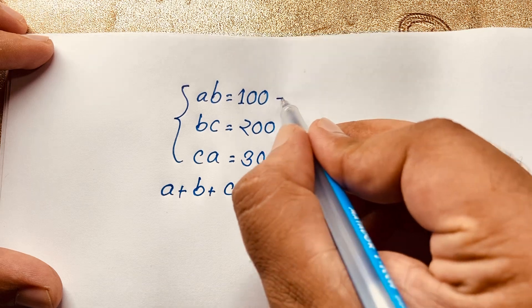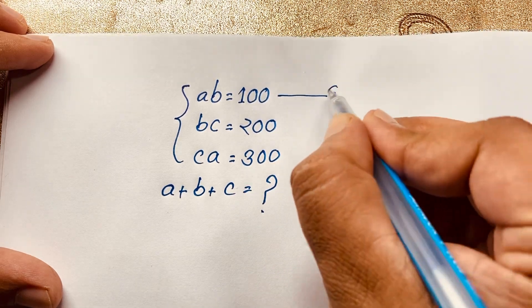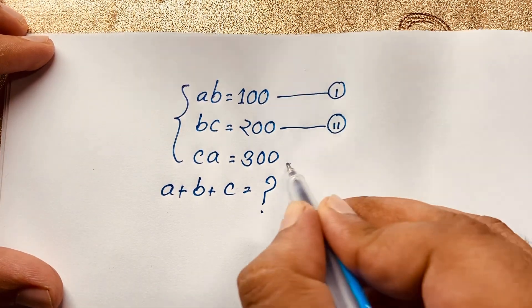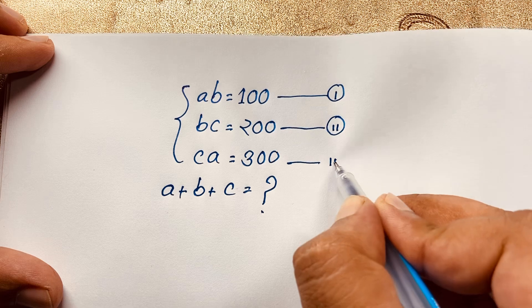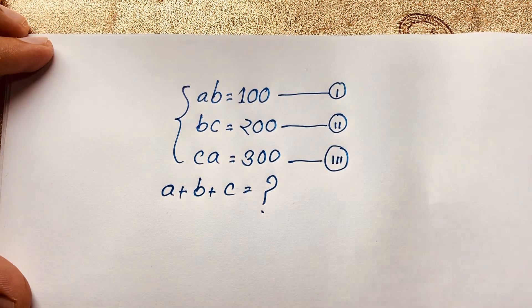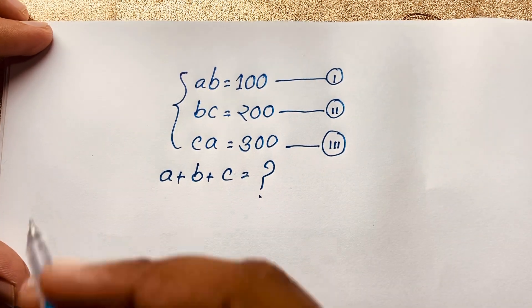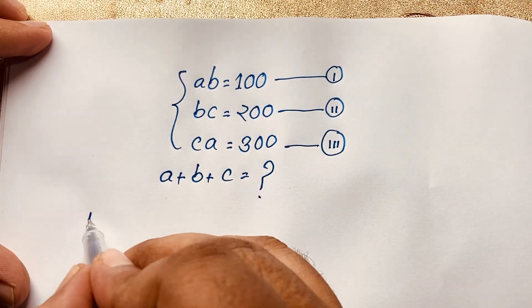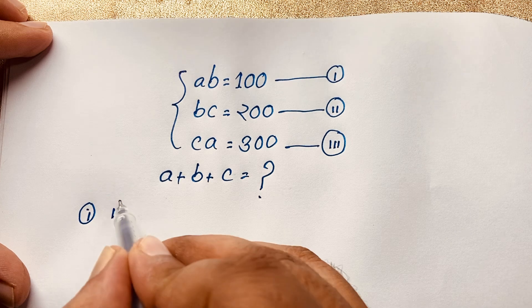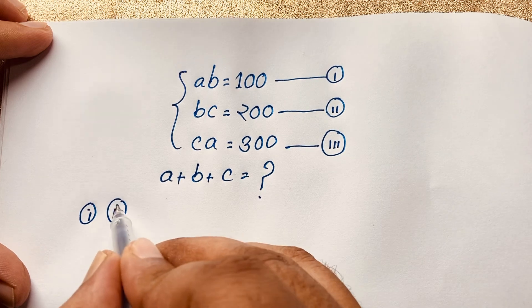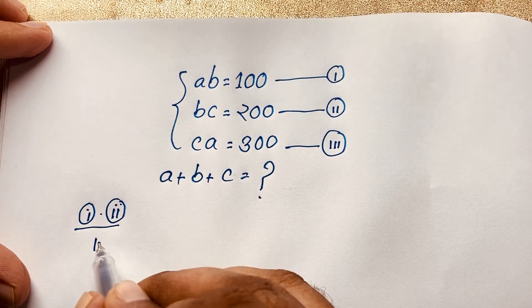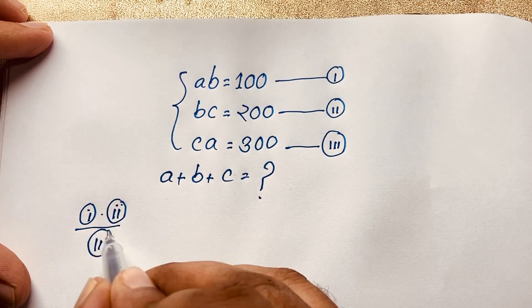So this is our first equation, this is our second equation, and this is our third equation. I solved this question using an easy method. First of all, I multiply the first equation and the second equation, then I divide by the third equation.